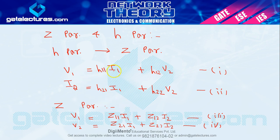Checking equation 1: it has V1, I1, V2 — but equations 3 and 4 don't have the same set. Equation 3 has V1, I1, I2 and equation 4 has V2, I1, I2. Checking equation 2: it has I2, I1 and V2. Equation 4 also has I2, I1 and V2 — match found! The matching equations are 2 and 4.